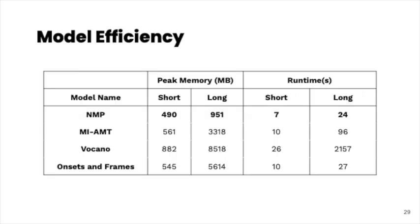As a final experiment, we compare the peak memory and the runtime of NMP and the baseline models. We see that NMP is much lighter in terms of memory usage compared to the baselines, on the order of gigabytes. It's also faster in terms of runtime, operating much faster than real-time. For more details on these experiments, see the paper.